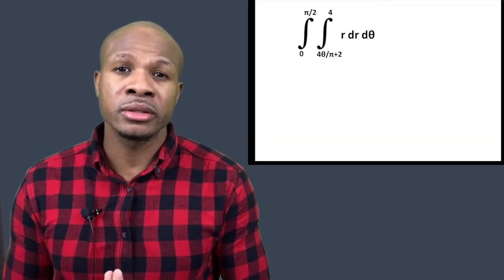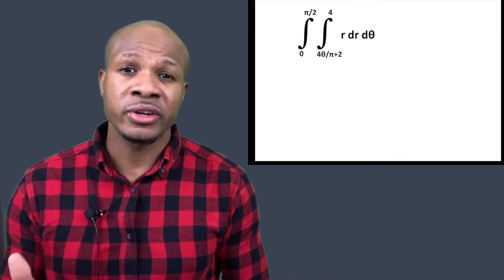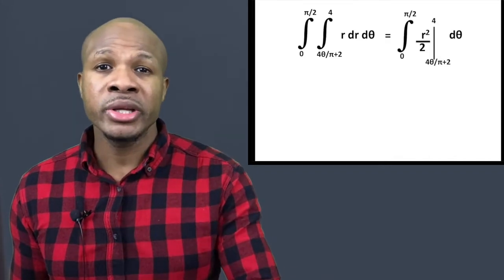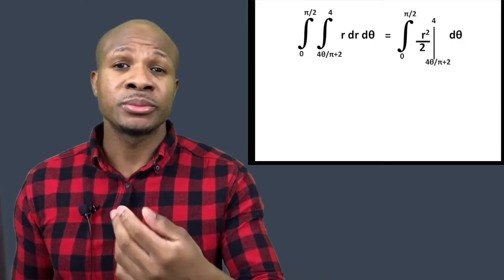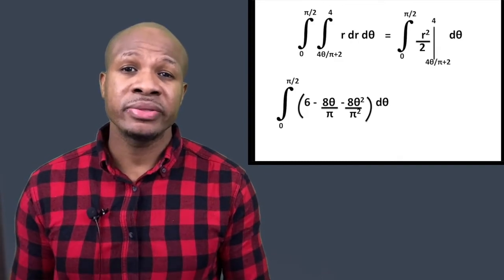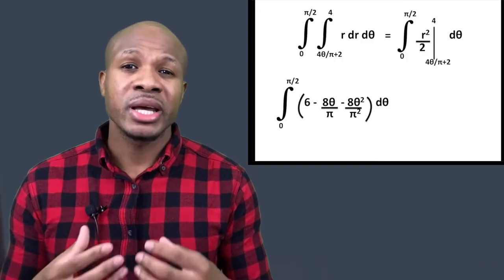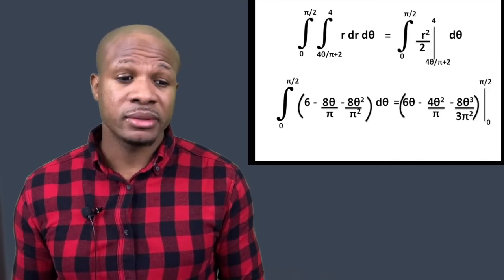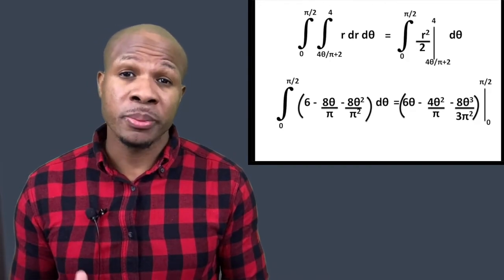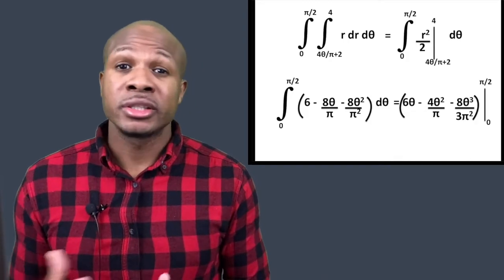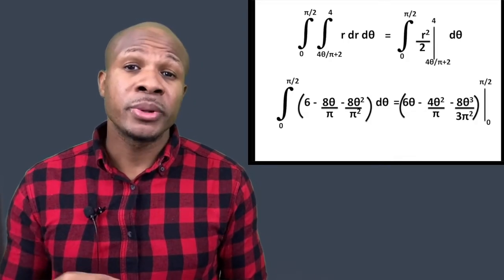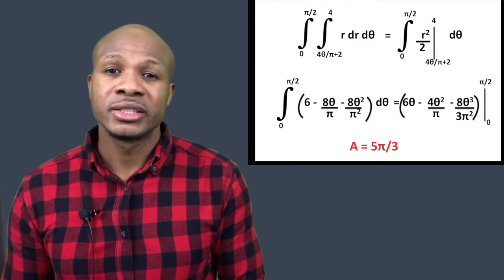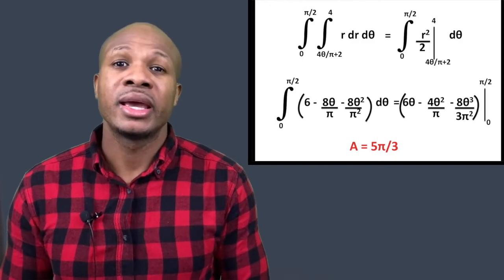We place the boundaries on the double integral and integrate r with respect to r, giving r²/2 evaluated from the lower to upper boundary. Plugging in and subtracting gives 6 − 8θ/π − 8θ²/π². Integrating this with respect to theta yields 6θ − 4θ²/π − 8θ³/(3π²). Plugging in π/2 gives 5π/3, and plugging in 0 gives 0, so the area of the region is 5π/3.